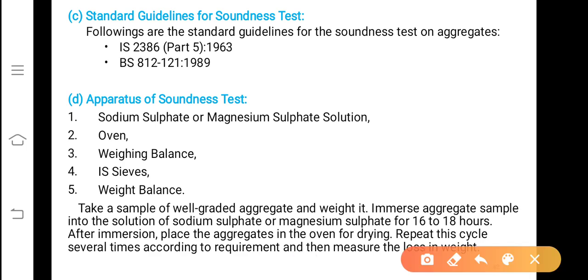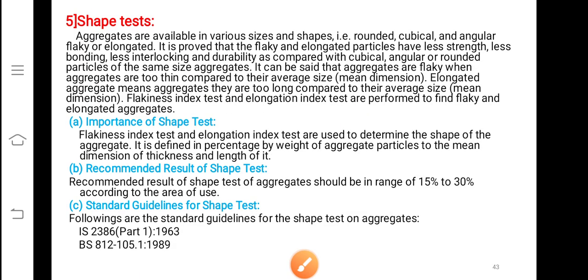Standard guidelines: IS 2386, instead of part 4, part 5. Apparatus for soundness test: sodium sulphate or magnesium sulphate solution, oven, weighing balance, IS sieves, weight balance. We will not take more on this. Next, shape test.